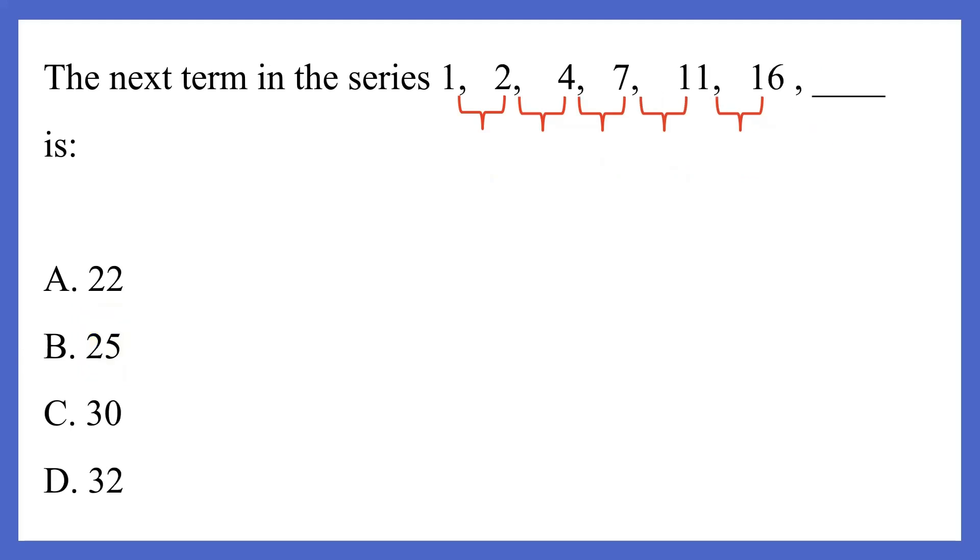Okay, so let's look at the next question now. The series here is 1, 2, 4, 7, 11, and 16. So let's take the difference between the numbers again. As you can see, 2 minus 1 is 1, 4 minus 2 is 2, 7 minus 4 is 3, 11 minus 7 is 4, 16 minus 11 is 5.